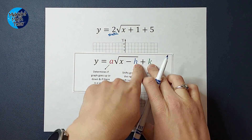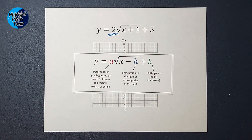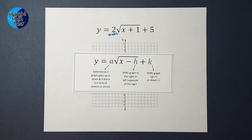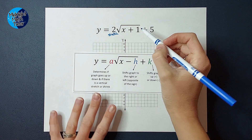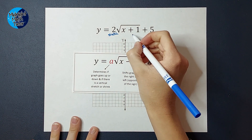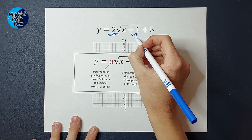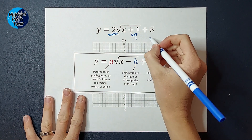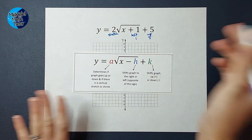The H and K tell me where my starting point shifts to — or my whole graph, really. On my parent graph, it starts at 0, 0. These numbers are going to tell me where the new graph starts. This plus 1 tells me how much it shifts right or left — you do the opposite of the sign, so plus 1 means we go to the left one. And the number added or subtracted on the back is how much my graph shifts up or down — you stick with the sign, so we go up 5.